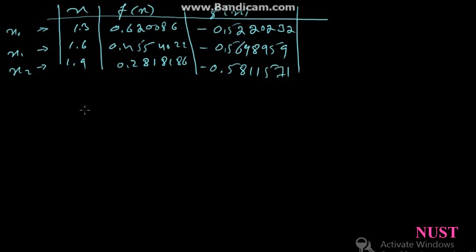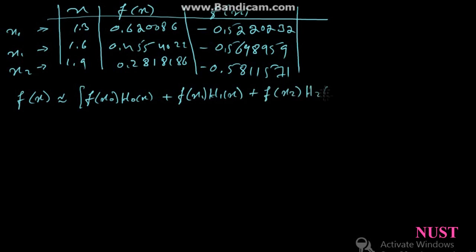f of x at x0 is 0.620086, at x1 is 0.4554022, and at x2 is 0.2818186. f prime of x, which is the derivative of f of x, at x0 is minus 0.5220232, at x1 is minus 0.5648959, at x2 is minus 0.5811571. This is the given data and we want to find f of x at a particular value between 1.3 to 1.6 or 1.6 to 1.9, which is what we call interpolation.